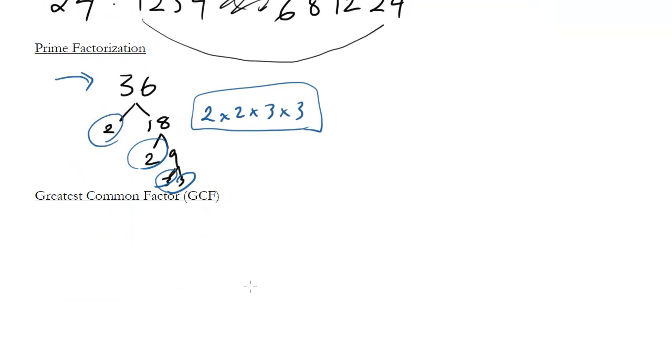Finally, greatest common factor. This is important for factoring things, in algebra for instance, distributive property, or factoring or simplifying fractions would be another example. Basically, you want to know what is the greatest factor that two particular numbers have in common. So let's look at two numbers. Let's look at 12 and 18.